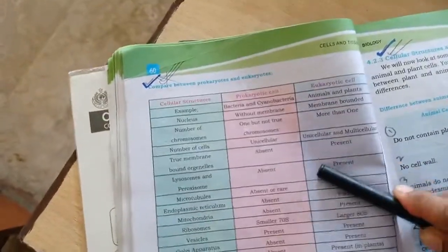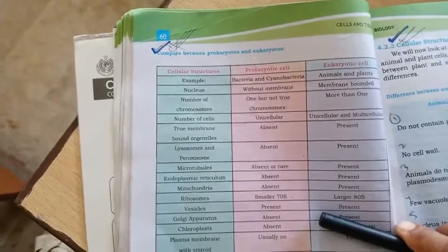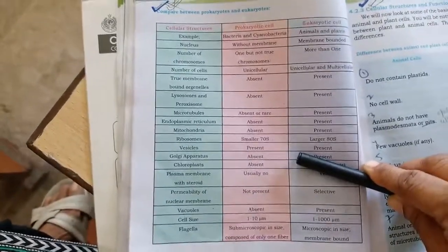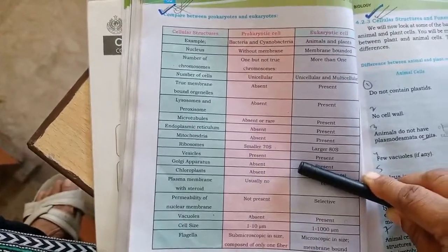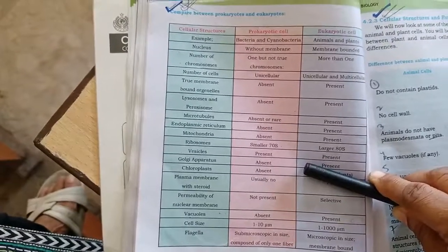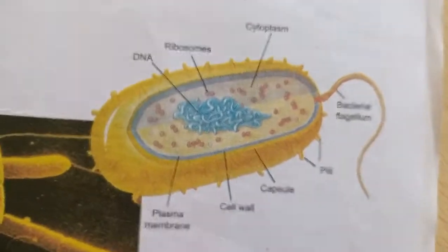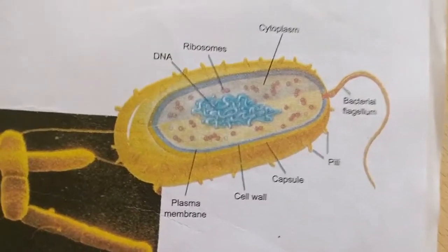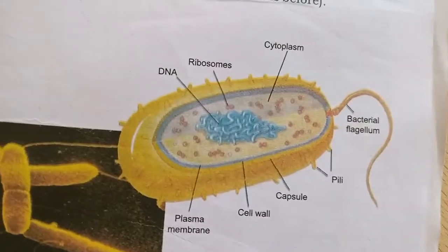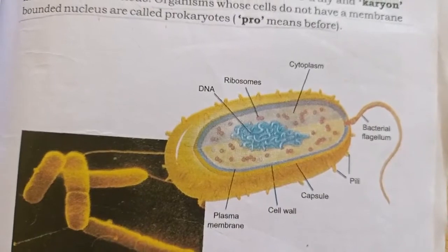What are the differences between prokaryote and eukaryote cells? Page number 60 — you have done this before and you have to copy it. Eukaryotes include all animals and plants. They have true membrane-bounded organelles. Structures absent in prokaryotes but present in eukaryotes include lysosomes, endoplasmic reticulum, mitochondria, and ribosomes.